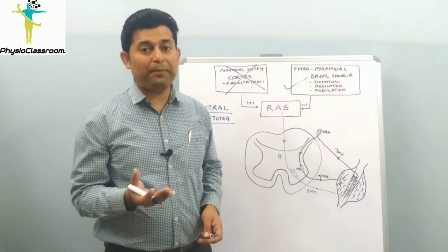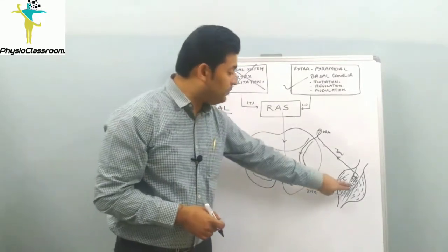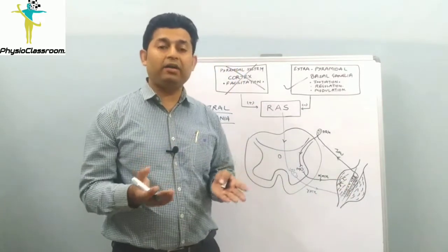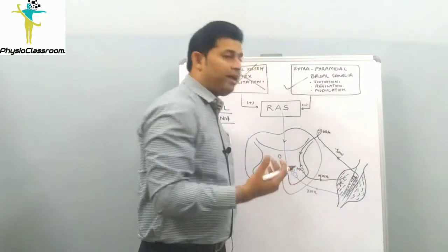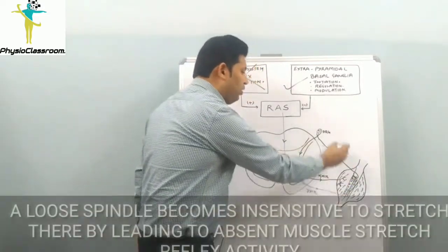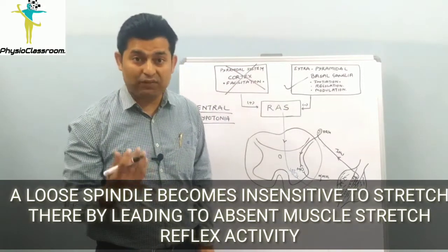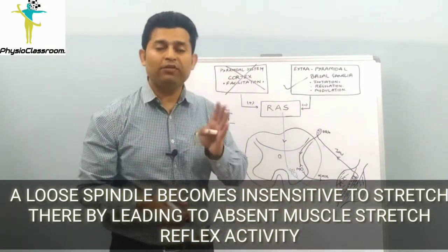What happens if the muscle spindle remains flaccid? It will become insensitive to any kind of stretch. Because there will be no recording of the stretch, no conduction will flow through the muscle stretch reflex arc, and the muscle will become flaccid.